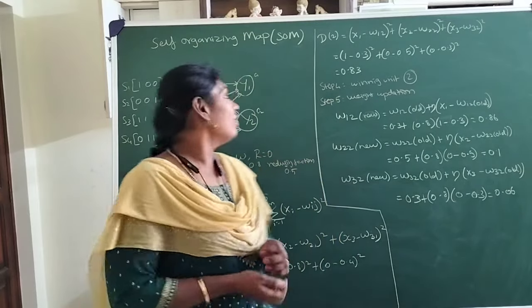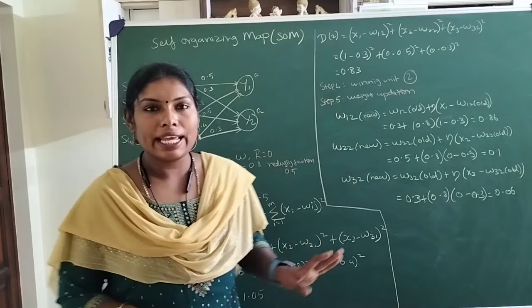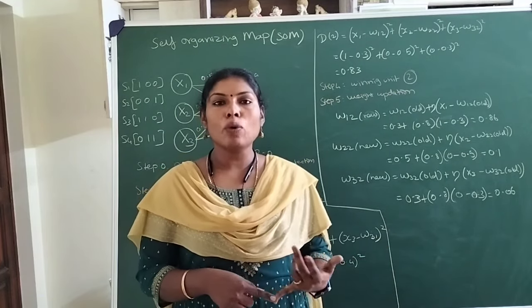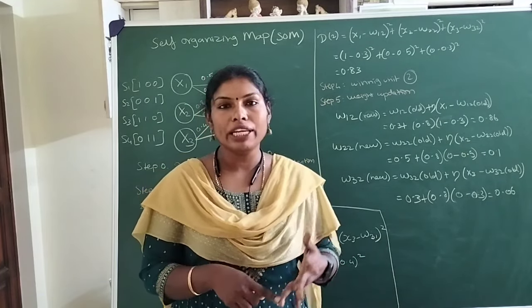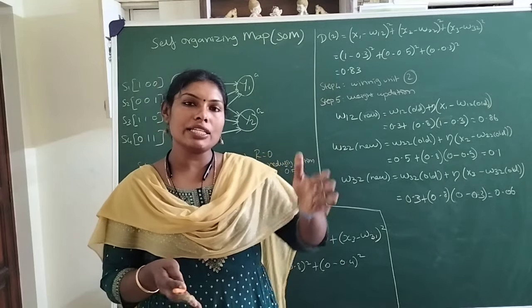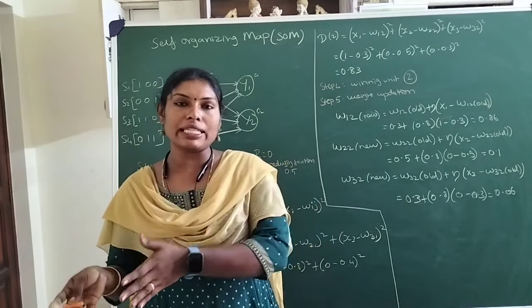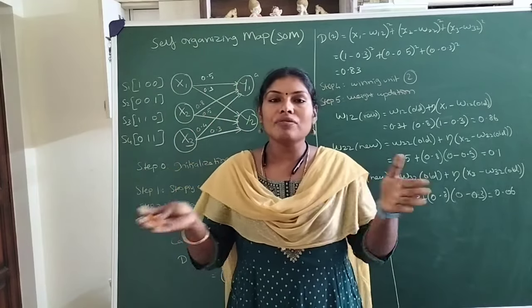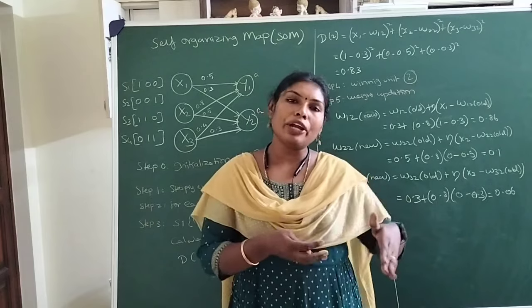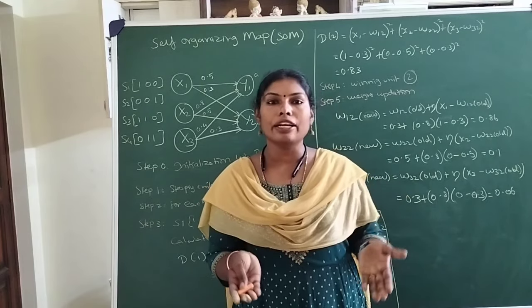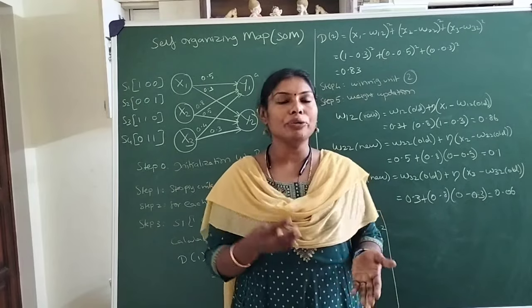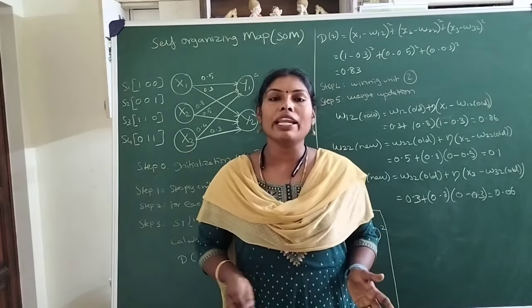Hello everyone. In this session we will learn one example for self-organizing map. Self-organizing map is an unsupervised learning model and it follows the principle of winner takes all. We will be presenting an input pattern, find the distance between the presented input pattern and the clusters, and whichever has the minimal distance we choose that as a winning unit and update the weight only for the links connected to the cluster unit, and within a certain radius we accommodate the remaining updates too.